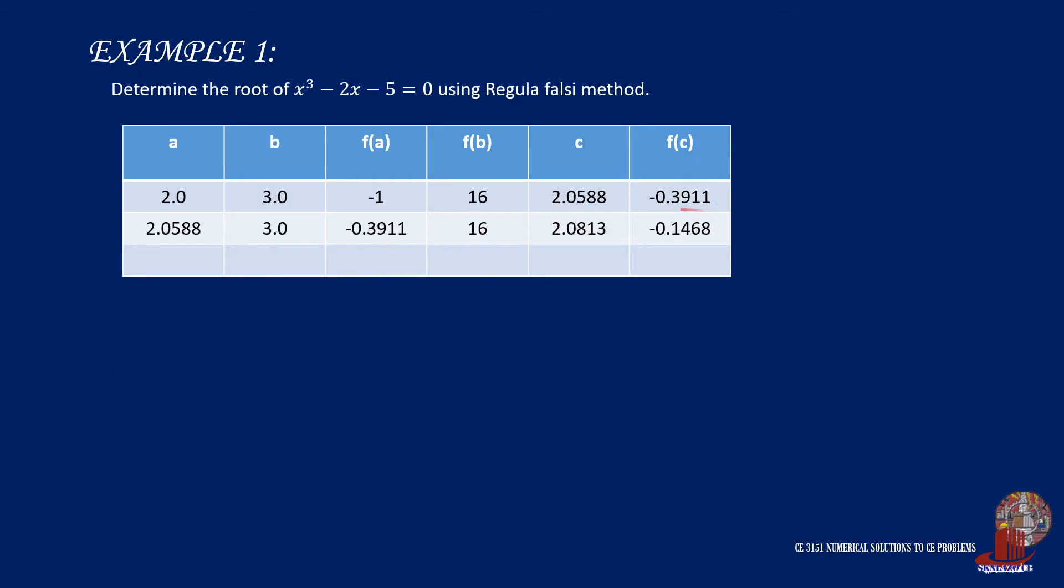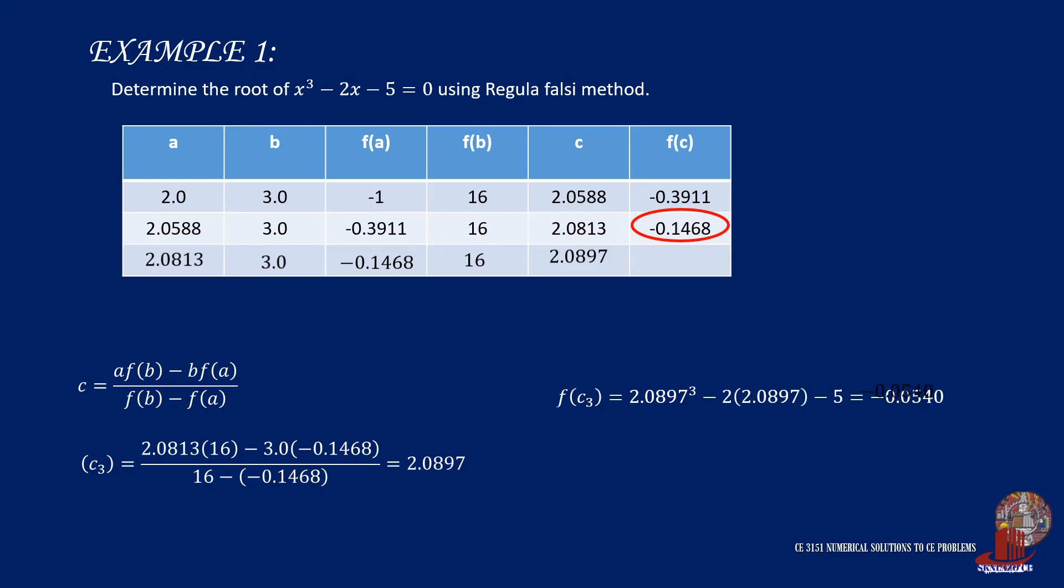Moving on to the third iteration, note that the value of the function of c is negative. So take c as replacement for the lower limit. Thus, 2.0813 would be a, with its function of a given as -0.1468. B would still remain the same as 3.0, and function of b would still be 16. Then, using the same formula, we would have to take value of c as 2.0897 this time. Plugging this value into the function of c, we are going to have -0.0540 as the third iteration for the function.